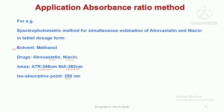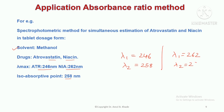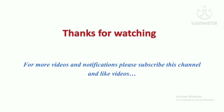For atorvastatin and niacin, the isobestic point is at 258 nm. So lambda 1 can be 246 nm (lambda max of atorvastatin) with lambda 2 as 258 nm; or lambda 1 can be 262 nm (lambda max of niacin) with lambda 2 again as 258 nm. Either calculation option will give the same answer. This is the same approach we have seen for sodium benzoate and caffeine. That is all about the absorbance ratio method. Thank you.